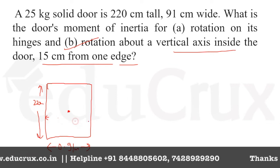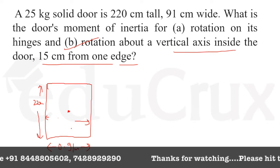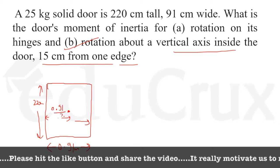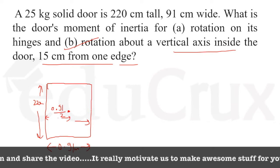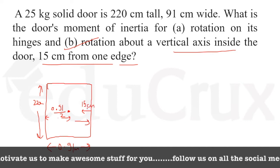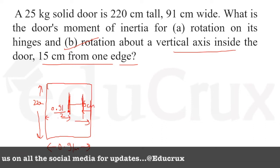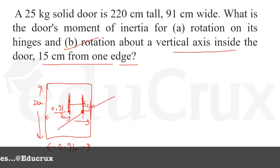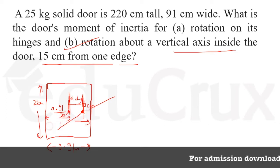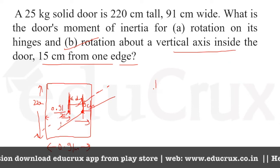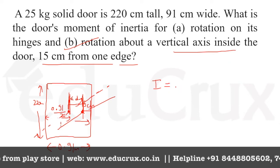If the total width is 0.91 m, the center of mass is at 0.91/2 from either edge. From one edge we move 15 cm to reach our axis of rotation. The distance d from the center of mass to this axis is 0.91/2 minus 0.15.